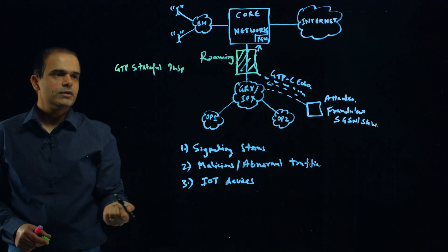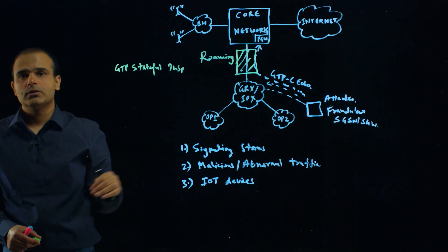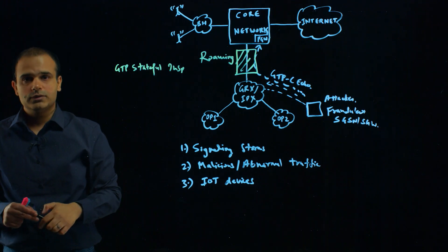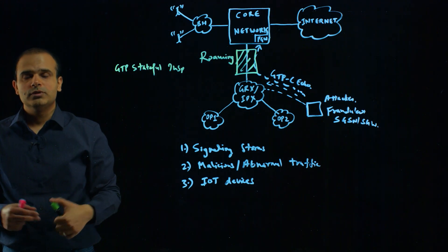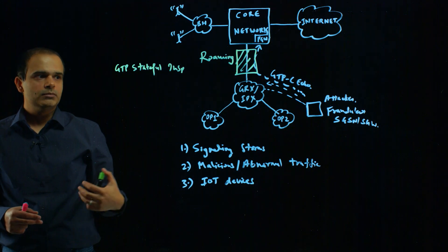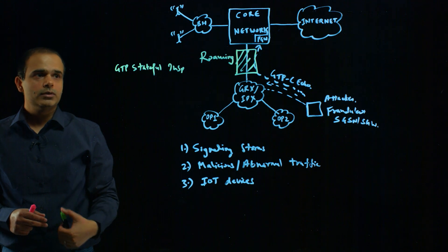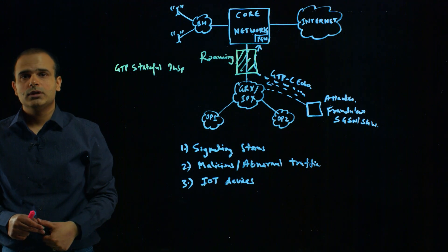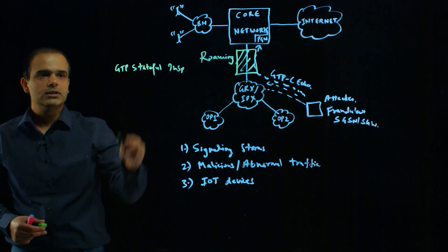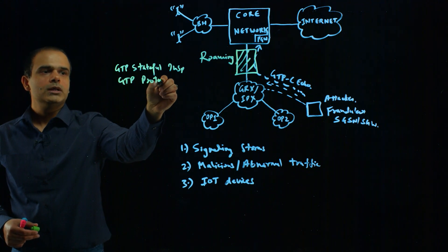The first capability is GTP stateful inspection. We can inspect all the GTP traffic and look for various forms of abnormal traffic which is not coming from a legitimate source. We can look into the state of these messages and deeper into the protocol standard. The second capability is GTP protocol validation.